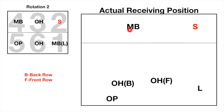Rotation two is quite obvious as well: the center remains in the front row and the outside hitter from the front row falls back to the back row to receive.